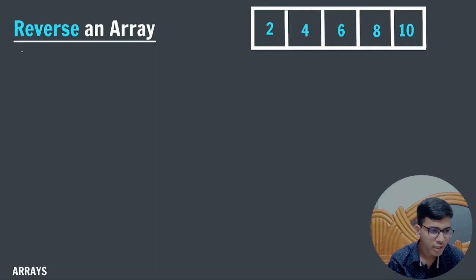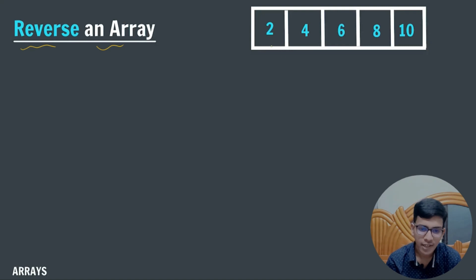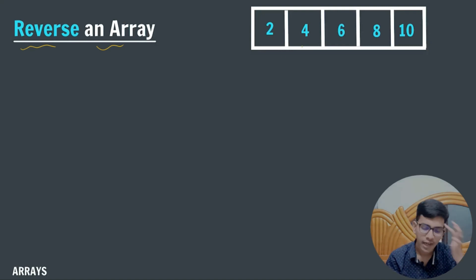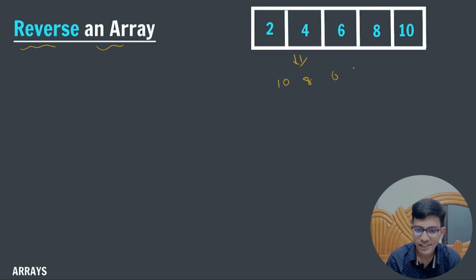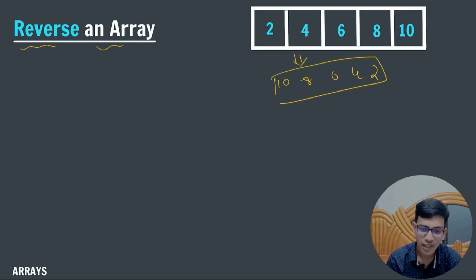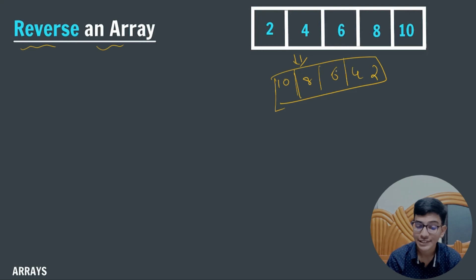In the given question we have to reverse an array. This is my array: 2, 4, 6, 8, 10 and the desired output is 10, 8, 6, 4, 2. So how are we going to do this? What is the logic behind this question?